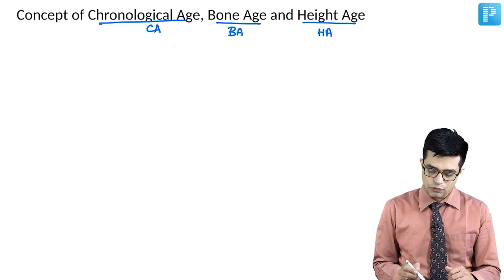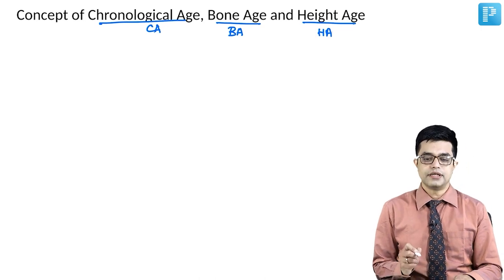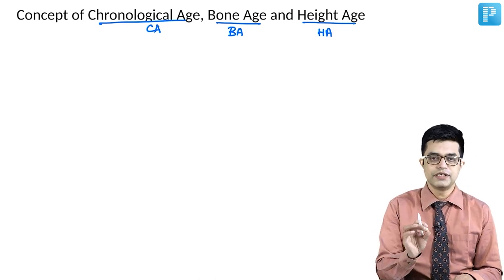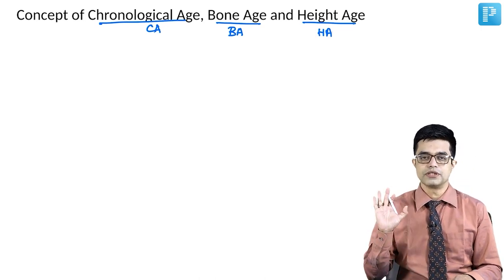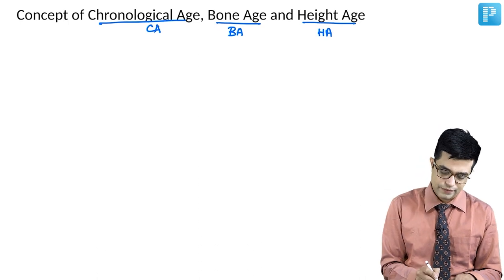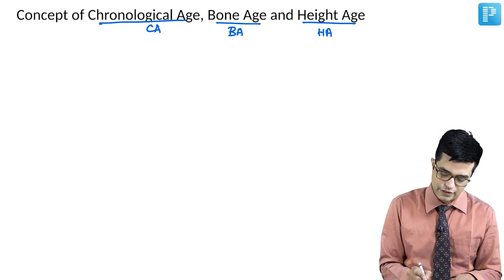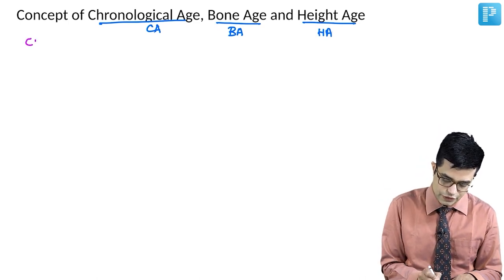What is chronological age of the child? The actual age of the child according to date of birth is chronological age. So, chronological age refers to the actual age of the child.